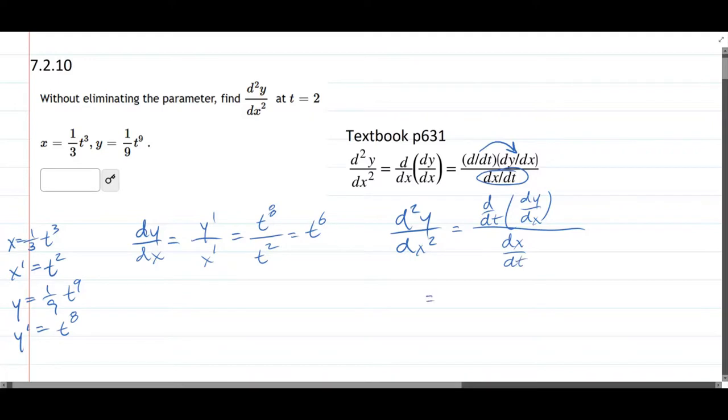And this dy dx was t to the sixth, we just computed that. dx dt is x prime right there, t squared.